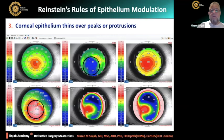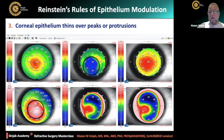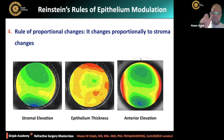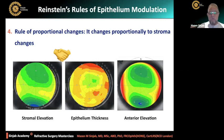Rule number three: corneal epithelium thins over peaks or protrusions — as in the case of keratoconus. Over the cone, the epithelium is very thin, to smoothen the anterior corneal surface. Rule number four is the rule of proportional changes — it changes proportionally to stroma changes. There is an agreement between the stroma and the epithelium in order to create a smooth anterior surface. If the stroma bulges out, the epithelium thins. If the stroma is flat, the epithelium thickens.